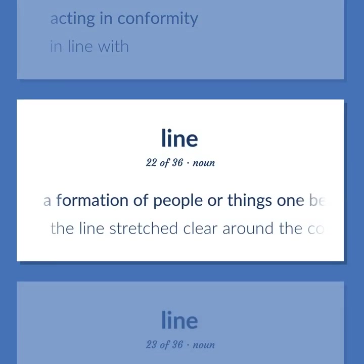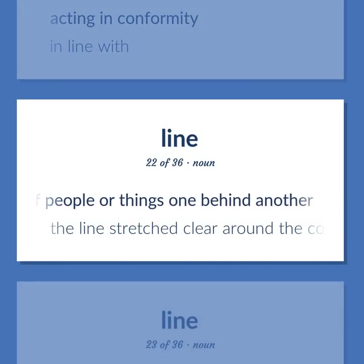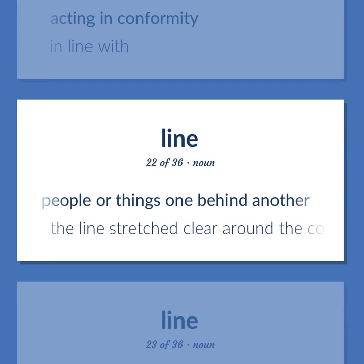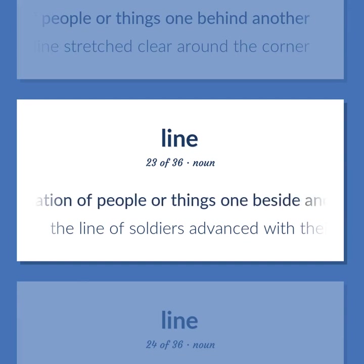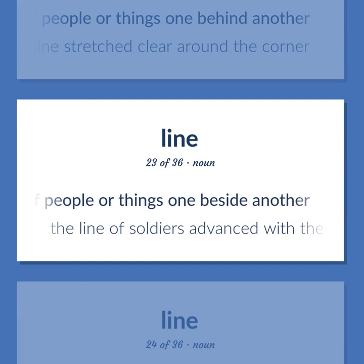Line: a formation of people or things one behind another — the line stretched clear around the corner. Also: a formation of people or things one beside another — the line of soldiers advanced with their bayonets fixed.